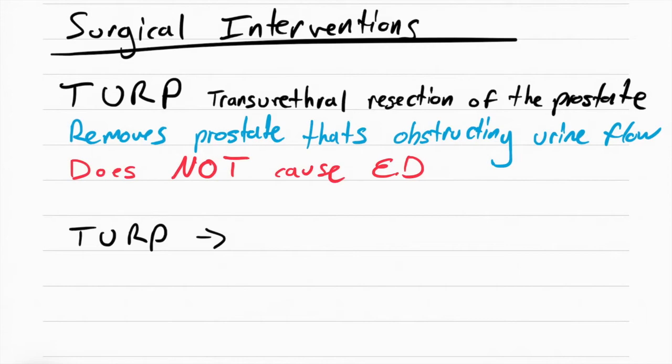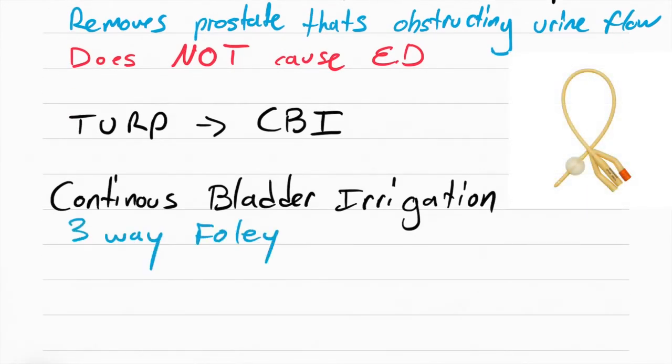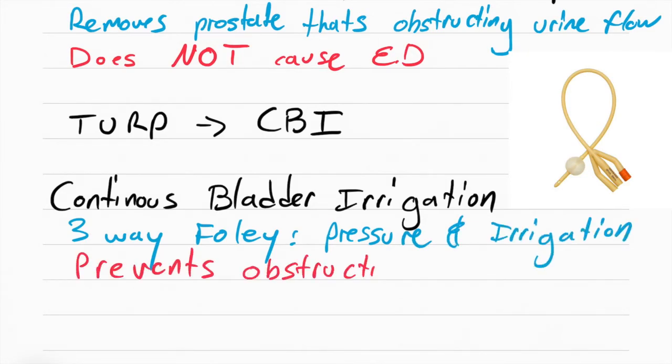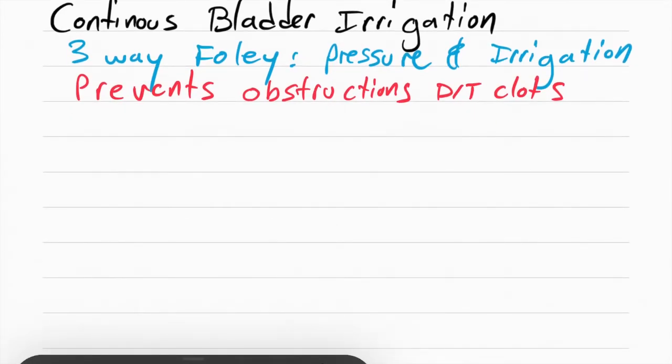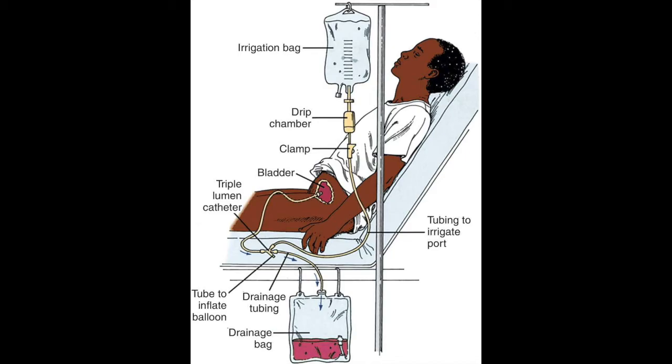After the TURP, there's going to be bleeding inside of the penis and we're going to have to stop that bleeding. How do we stop bleeding? We put pressure on it. How do we put pressure inside the penis? We put a really big foley. This is a three-way foley that's going to provide pressure and irrigation on the site. The irrigation is used to prevent obstructions from clots that can build up when the blood just stays in that area.